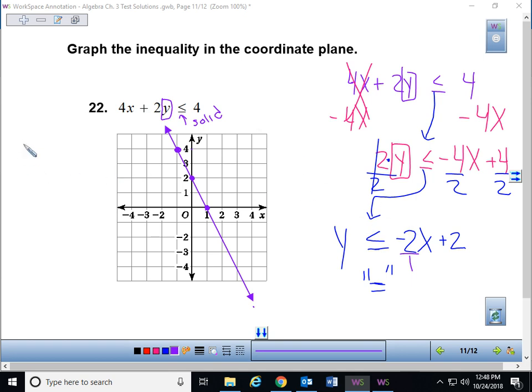But we're not done. You're not done until you figure out where you have to shade. So we have to pick a test point. And you guys know I like easy points. So if possible, I will choose 0, 0 as long as it's not on my line. 0, 0 is the origin, where the two axes cross. That is not on my purple line, so I can definitely plug it in.